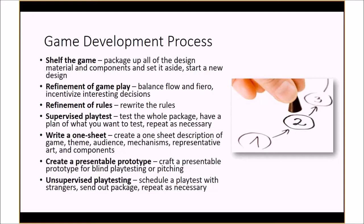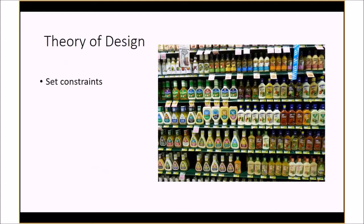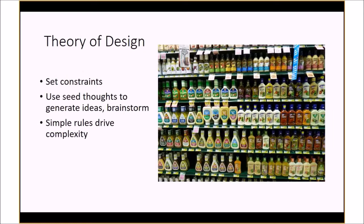One of the things you want to do when designing anything — a board game or any project — is set some constraints for yourself. I'm going to build a project with this kit: the constraint is the kit. Don't sit down and say 'I'm going to build some electronics project' with no boundaries. When Ned came to the Zoo Make and wanted to make a zoetrope, that was our constraint. Another constraint was 'it's got to be done by August 17th.' As engineers, if we don't have constraints, we never get anything done.